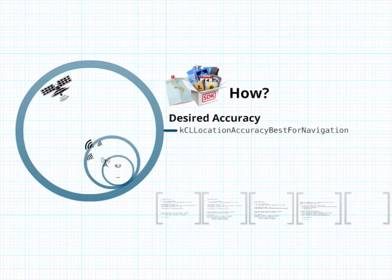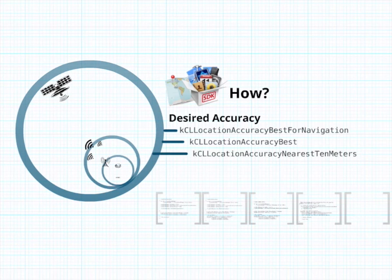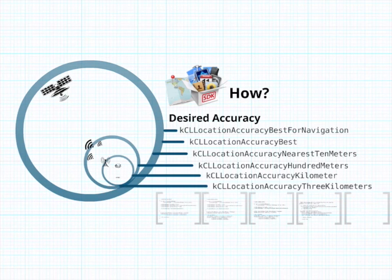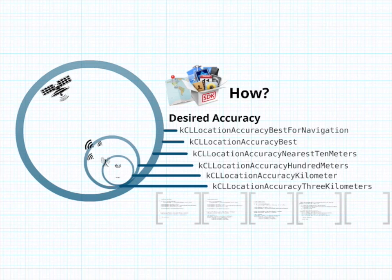When asking for your user's location, you set the desired accuracy: best for navigation, best, nearest 10 metres, 100 metres, kilometre and three kilometres. You can guess which technologies it will use, but you can't control it. If you ask for the highest accuracy, it's going to use GPS. If you want something lower powered, it's going to use the cellular tower. GPS isn't the be all and end all. If you have a genuine reason why your app needs GPS, you can specify this in your info.plist file to prevent users from downloading your app onto devices that do not support the capability.